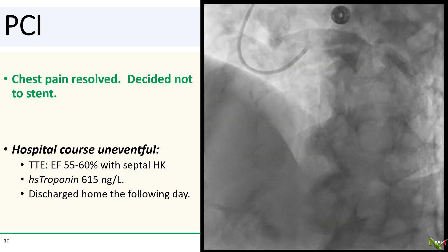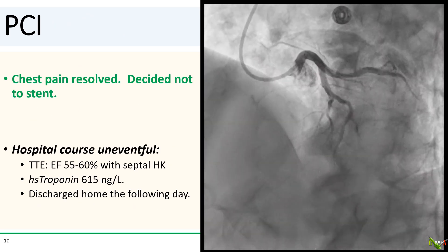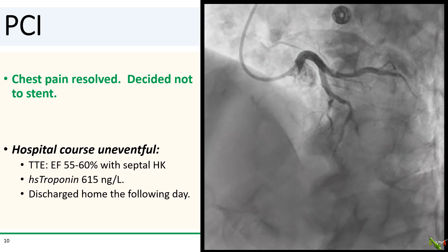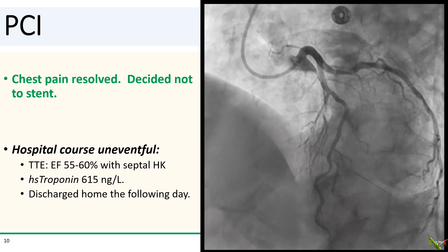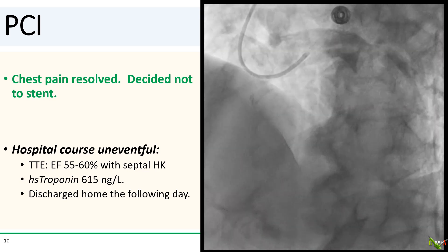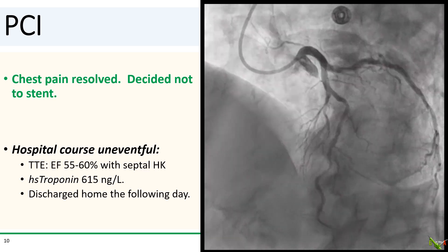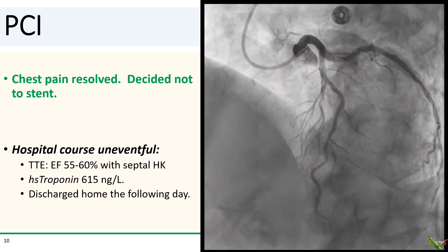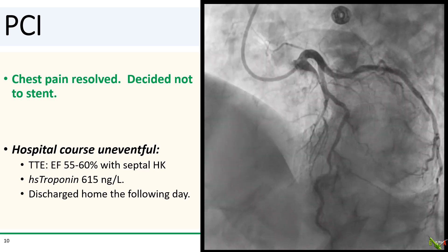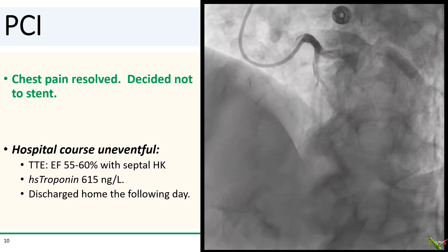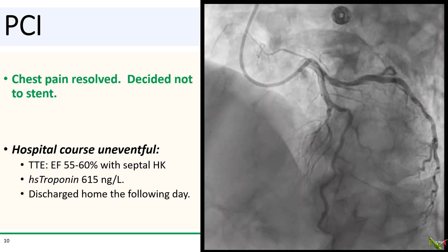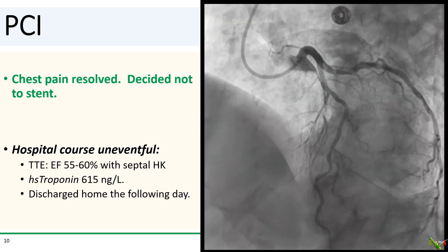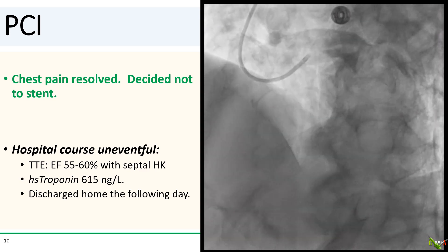For our patient, we decided to stop at POBA. His chest pain resolved, his septal was fairly small, and we already had good flow. He did well — EF remained normal, the septum was hypokinetic as expected, his high-sensitivity troponin was only mildly elevated, and he went home the following day.